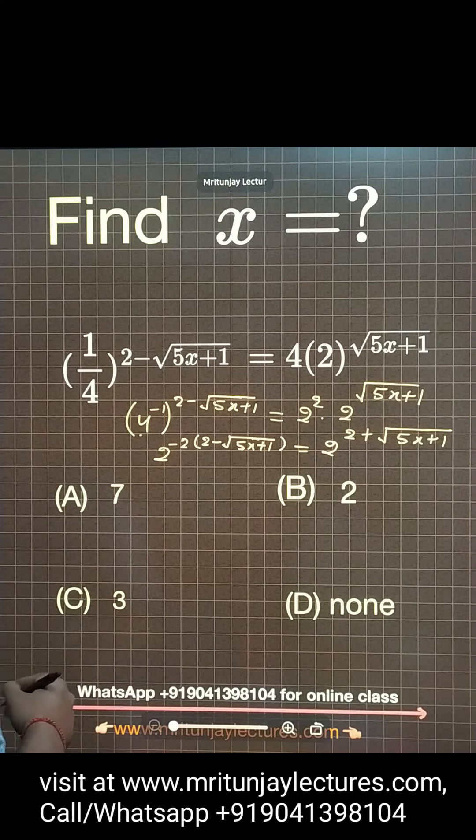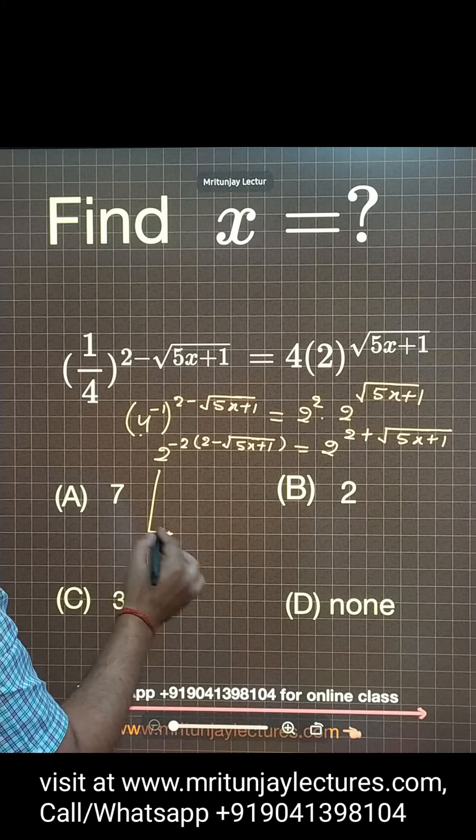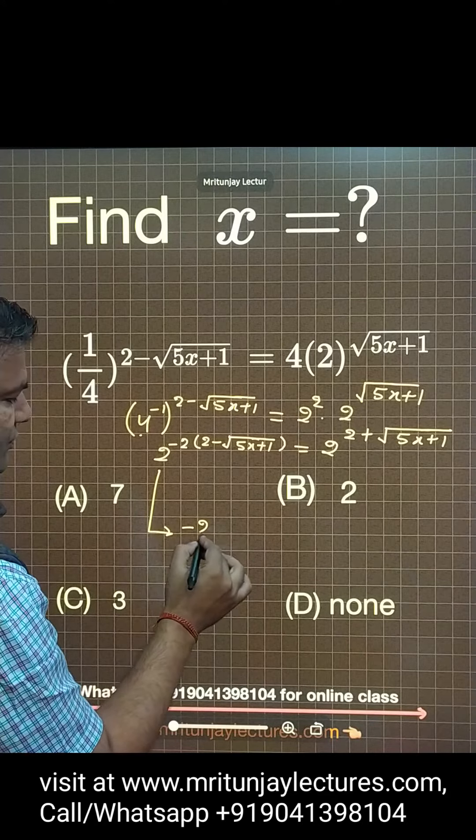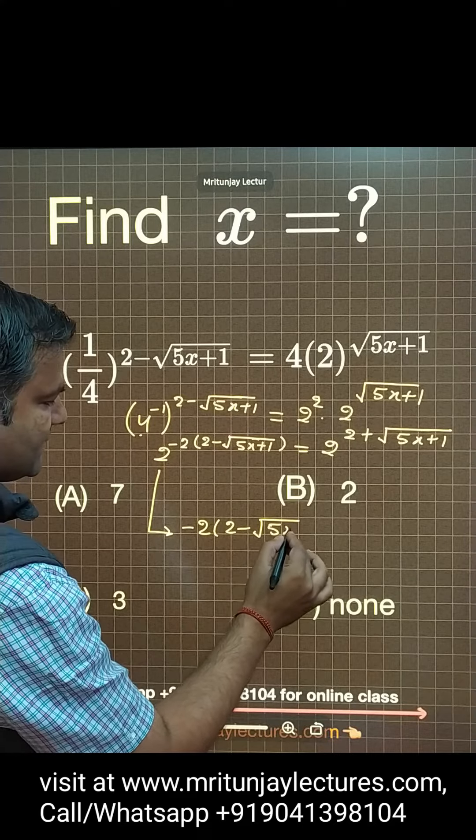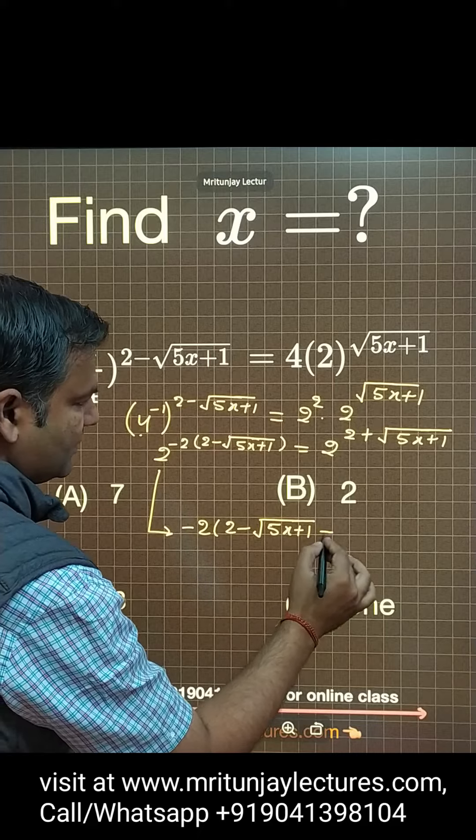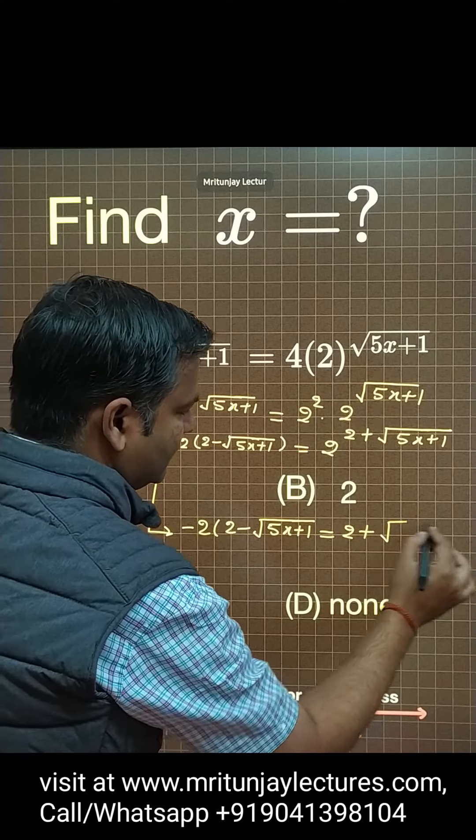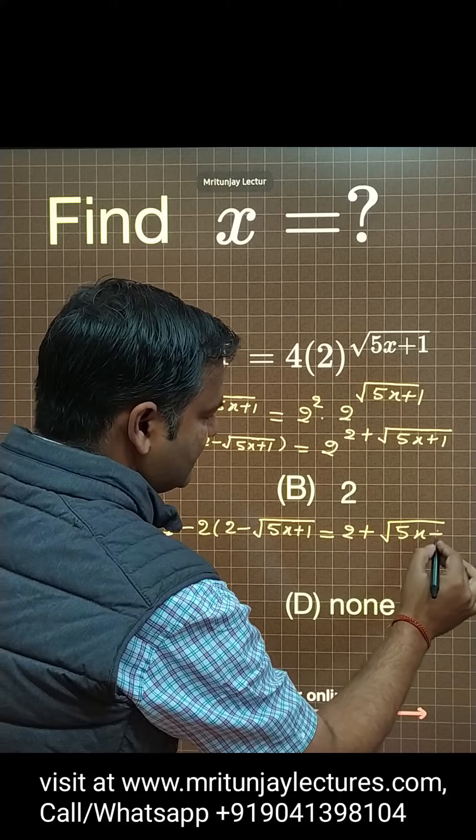Base are same, so now power is compared. So minus 2 into 2, 5x plus 1, this is equal to 2 plus 5x plus 1.